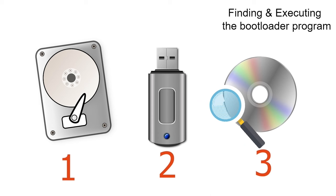For example, suppose three devices — hard disk, DVD-ROM, and USB drive — are configured in the boot device priority. Firmware will first find the bootloader on the hard disk. If found, it executes it without checking the DVD-ROM or USB drive. If not found on the hard disk, it checks the DVD-ROM. If the DVD-ROM has a bootable disk, it finds the bootloader there. If not, firmware checks all USB ports for a connected USB drive. If no bootloader program is found on any specified device, firmware halts the boot process.